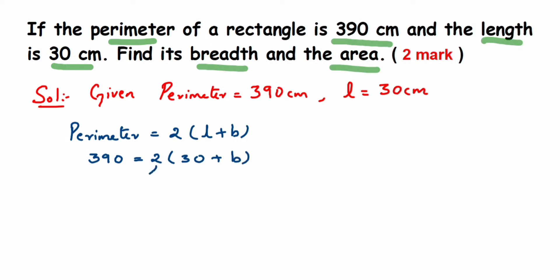Now we can transpose this 2 to the other side. So 2 is in multiplication. When we transpose this to the other side it comes in division. So it will be 390 divided by 2, so 390 upon 2 is equal to 30 plus B.